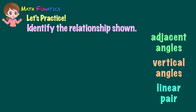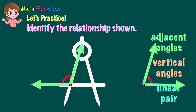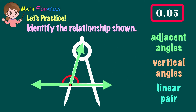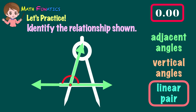Next, what is the relationship shown by the angles of the compass? What's your answer? Correct! They form a linear pair.